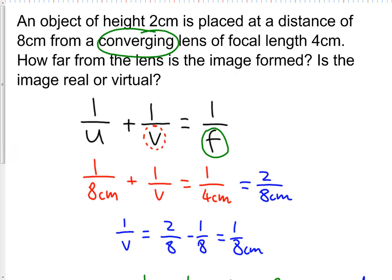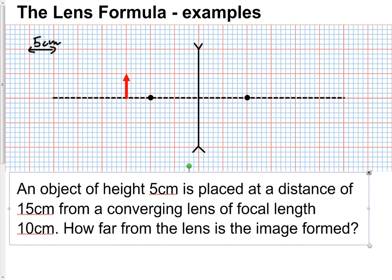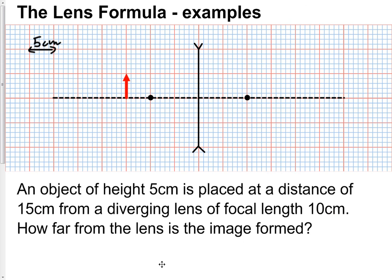Let's do one more example to illustrate these conventions. Now we've got an object of height 5cm, so each of these red squares now represents 5cm. It's placed at a distance of 15cm from a diverging lens of focal length 10cm. How far from the lens is the image formed?